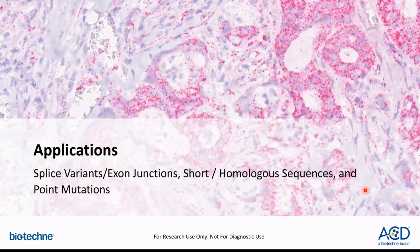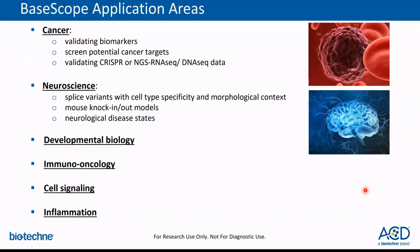Thank you, Haley. I'll be detailing the different applications for which we can use our BASCOPE assay. The BASCOPE assay has been widely used for several application areas, but the most popular research areas include oncology and neuroscience. Since point mutations and splice variants have significant pathological implications in cancer, BASCOPE is frequently used to visualize these targets in situ. We have also seen wide applications of the BASCOPE assay for detecting circular RNAs, gene fusions, and splice variants in the brain. In addition, BASCOPE has been frequently used in developmental biology, immunology, cell signaling, and inflammation research.